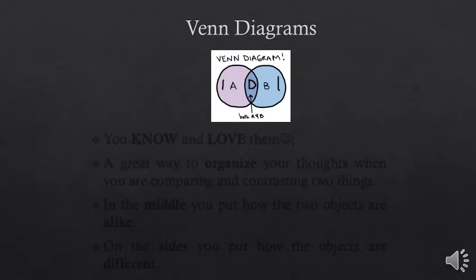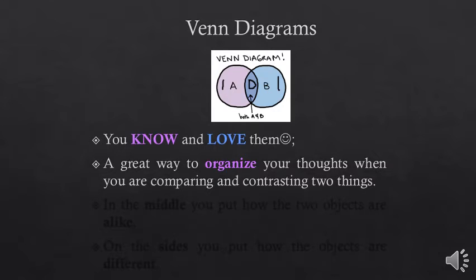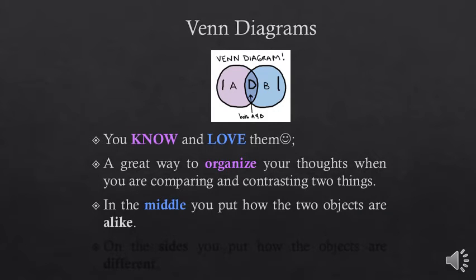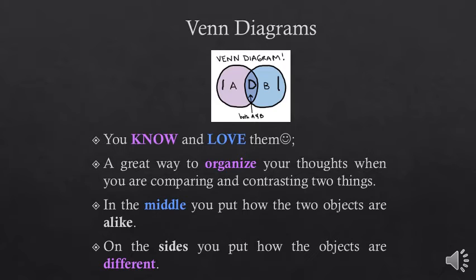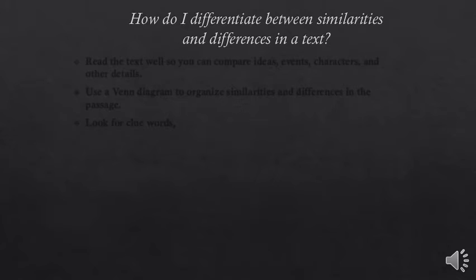When we want to compare and contrast, we use something called a Venn diagram. A Venn diagram helps you organize similarities and differences. In the middle, you put how the two objects are alike, and on the sides you write the differences between the two objects you are comparing and contrasting.